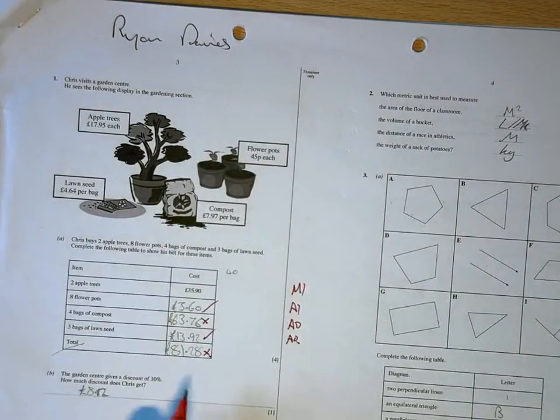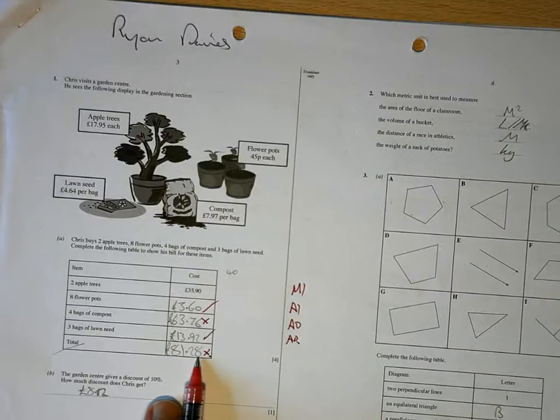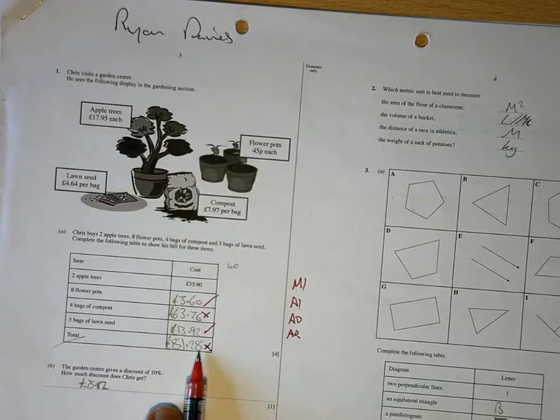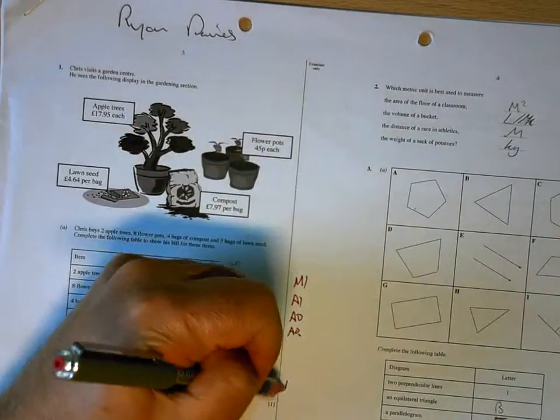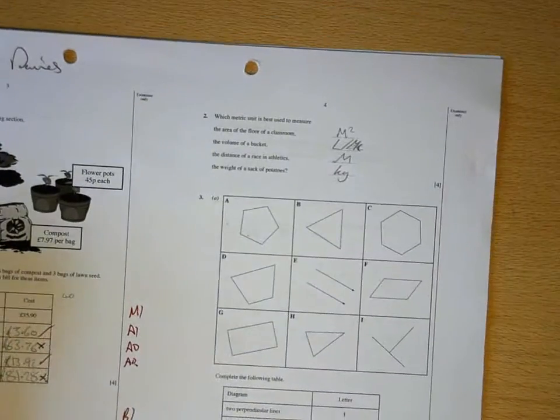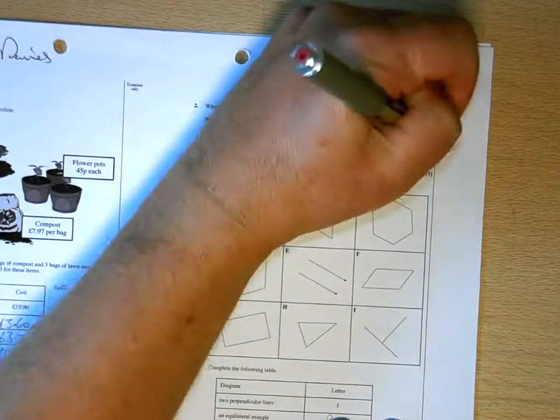And your 10%, it should be £8.13 because that's bigger than five, so that should be £8.13. But it's really on the paper, and you'll get that mark for how you've done it. Metres squared, litres, metres, kilograms, good.